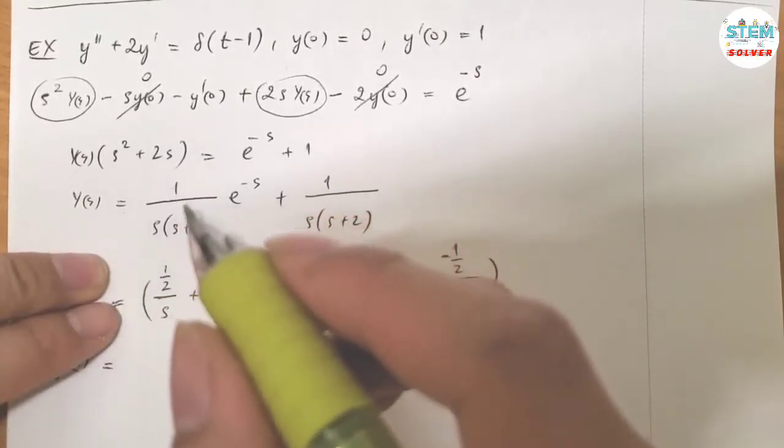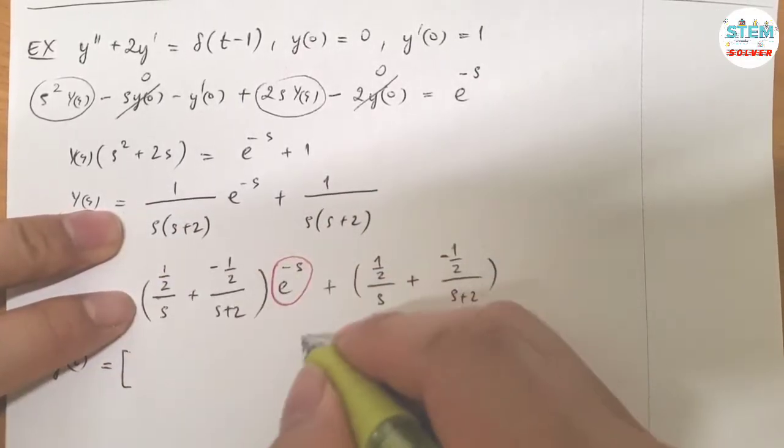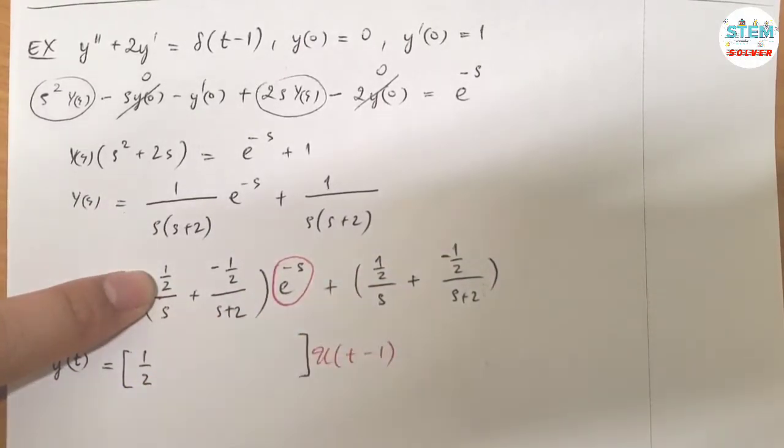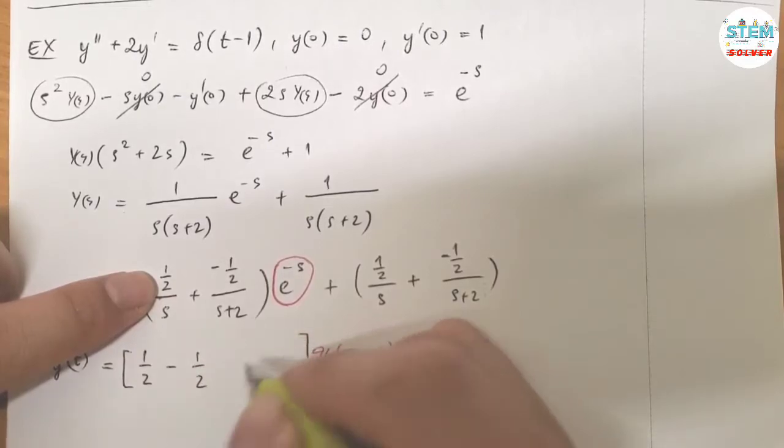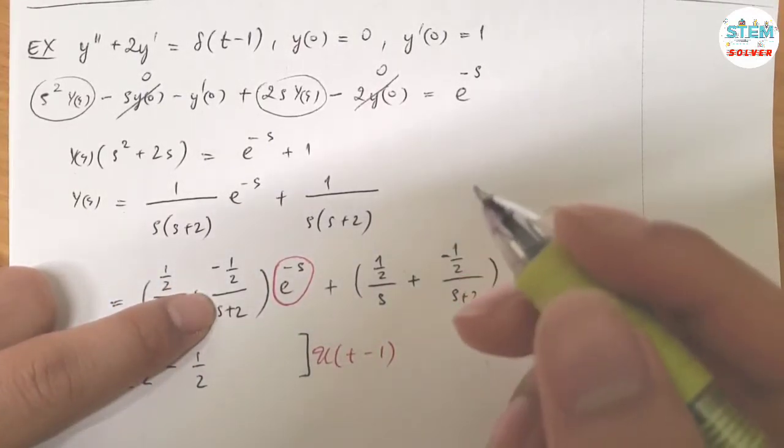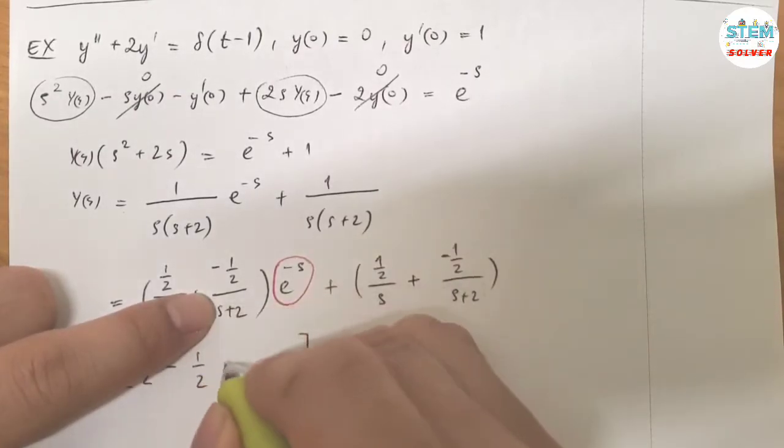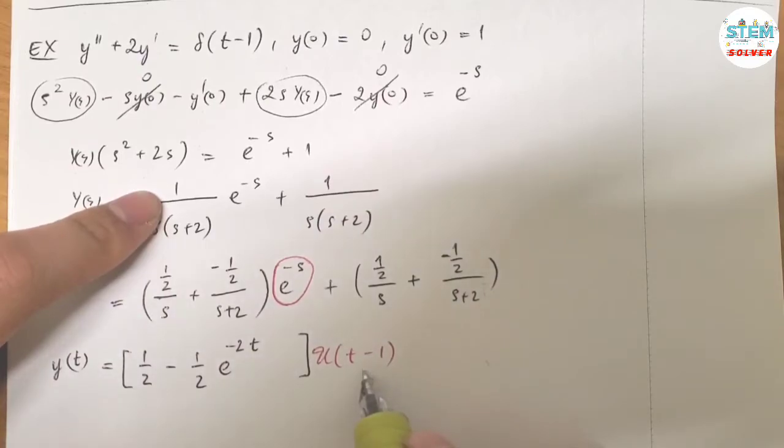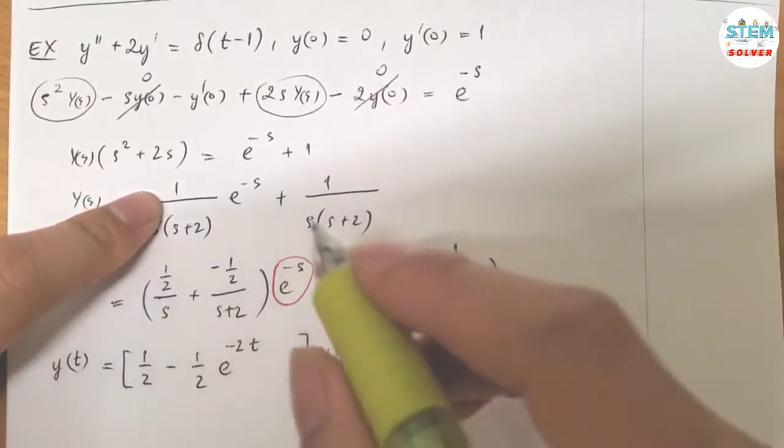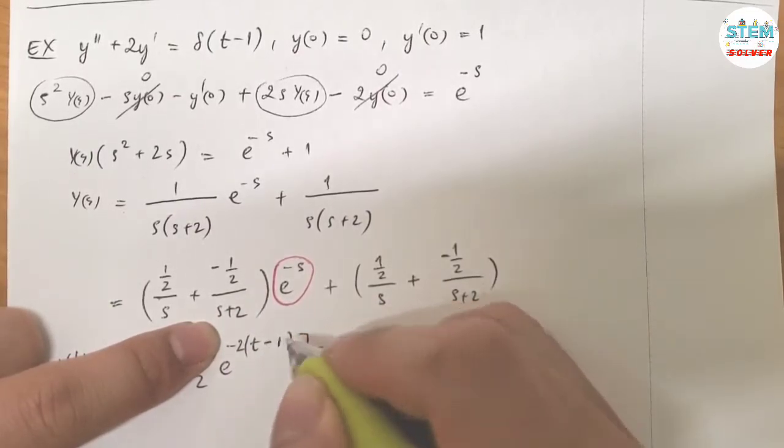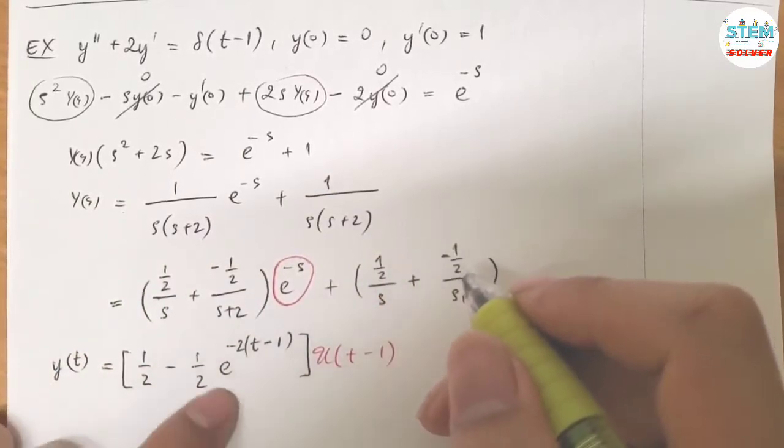Now for this one, you are going to have 1 half, right? L inverse of this is 1 half. Minus 1 half. L inverse of this is e to the negative 2t. That's because you have the unit step function, so the t has to match up. That means that you actually need to have t minus 1 instead of just t.